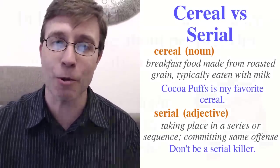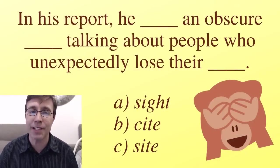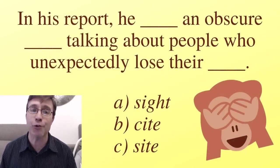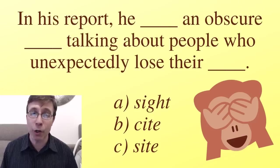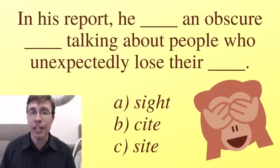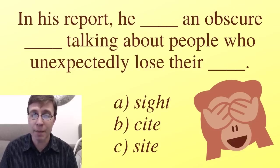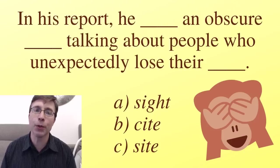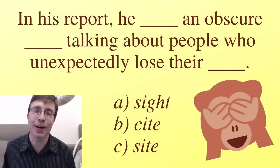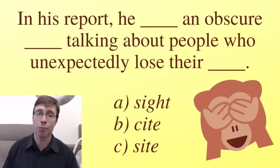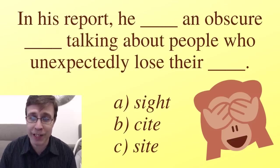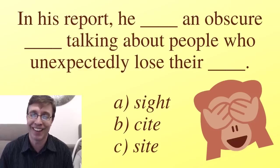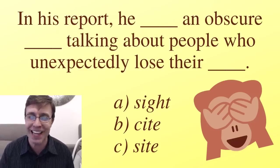Now this is the three-word homonym set: cite, site, and sight — all pronounced the same. 'In his report, he ___ an obscure ___ talking about people who unexpectedly lose their ___.' You're going to use all three words — A, B, and C — you just need to put them in the right place. I didn't conjugate the verb, so bonus points if you conjugate it correctly.